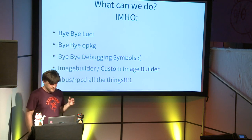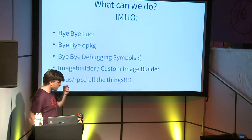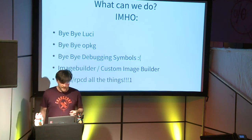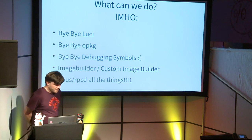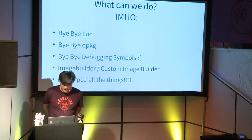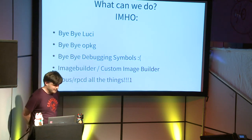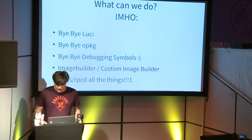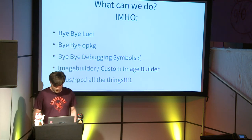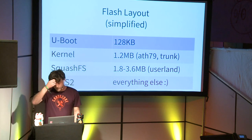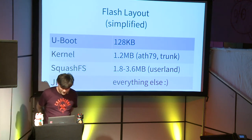The approach to use these devices would be to use the image builder functionality of OpenWRT and build custom images for these 4-megabyte devices. For having a web interface, I would propose to use UBus and RPCD and keep the web interface outside of the device.